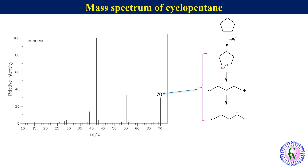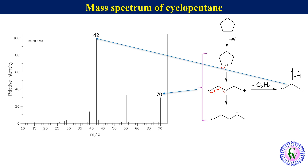The radical cation can undergo fragmentation to eliminate an ethylene molecule, producing a radical cation with m/z of 42, which then eliminates a hydrogen radical to produce an allyl cation with m/z of 41. C-C bond breaking and cyclization results in expulsion of a methyl radical and formation of a cyclobutyl carbocation with m/z of 55.